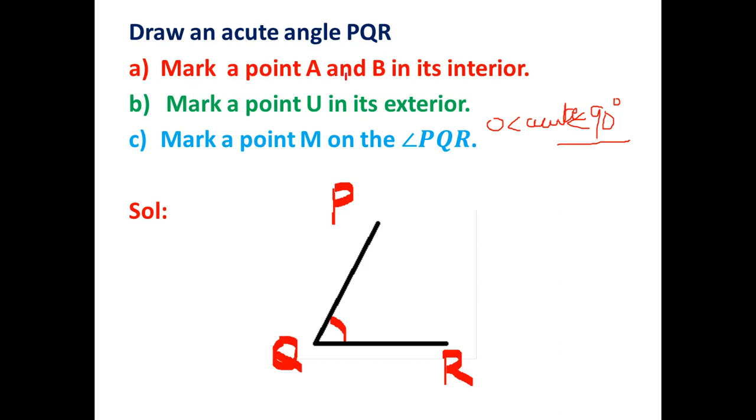Then I have to mark a point A and B in its interior. This is all the interior region. The region inside this angle. So I mark a point here and I name this as A. I mark a point B here.